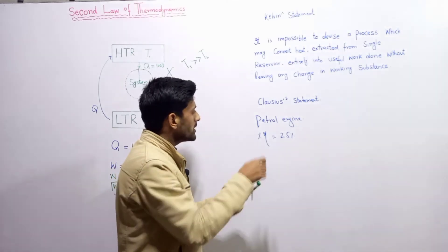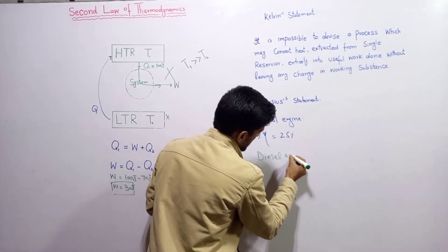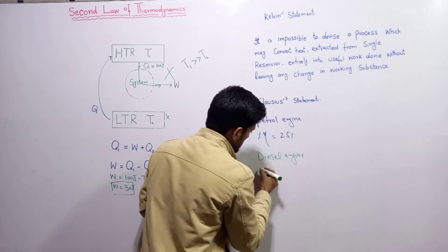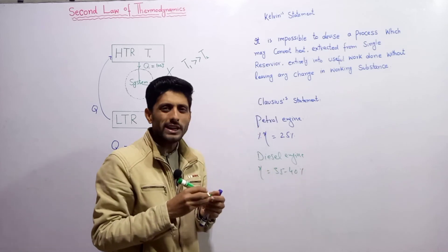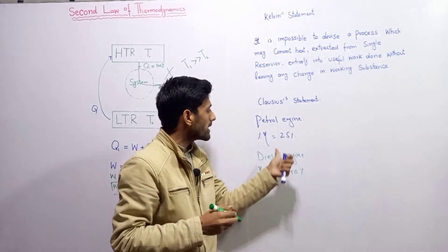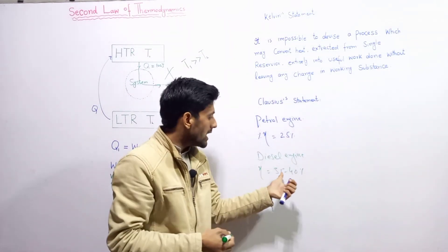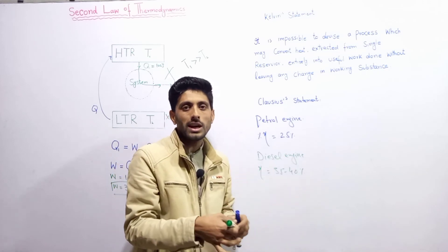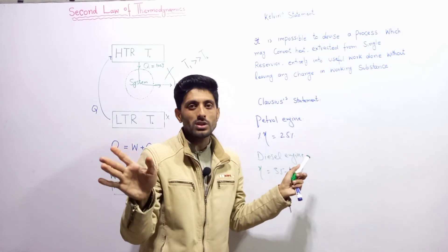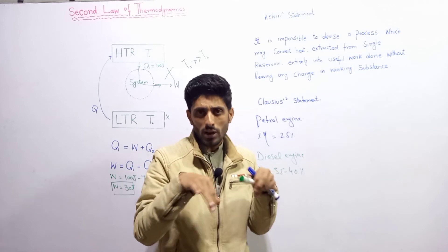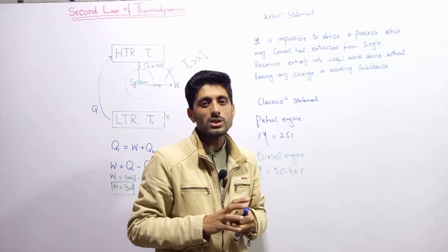A diesel engine has a higher efficiency compared to a petrol engine. If you give 100% input to a diesel engine, it gives output between 35–40%. The remaining 60–65% is expelled to the environment — it is wasted. The environment acts as a sink for these engines.